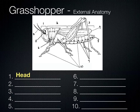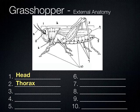The head is where many of the sense organs are — the antennae, the eyes, the mouth, and so on. The second section is where legs and wings attach — that's the thorax. And then the last section is where most of the reproductive organs are — the abdomen. Head, thorax, and abdomen — those are the three main body sections.